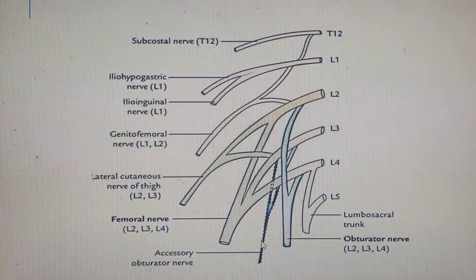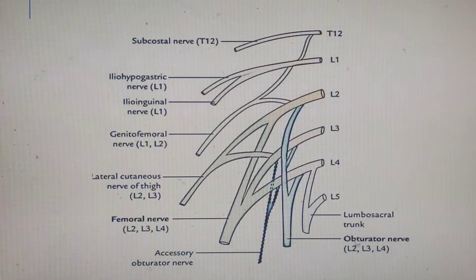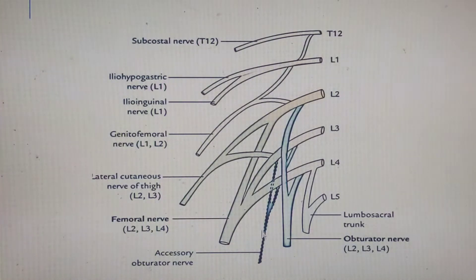In about 30% of the population, there is an accessory obturator nerve, which augments the function of the obturator nerve. Since the obturator nerve comes from the anterior secondary rami, it makes sense that the accessory obturator nerve also comes from the anterior aspect of the primary ventral rami. Its root value is L3 and L4.